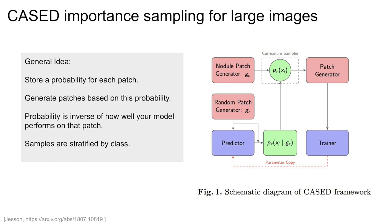One solution is an idea called Caste. The idea is to store a probability for each image patch, which is used to sample patches for each training batch. The probabilities are calculated by evaluating the current model on all patches and taking the inverse of performance normalized. This can be very computationally expensive to compute, but the benefit is that your training batches are more informative.